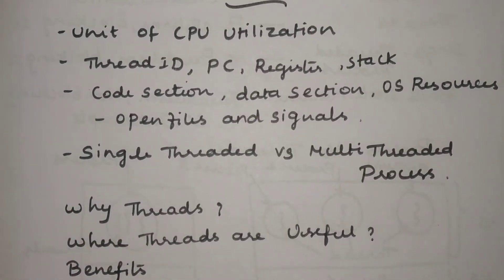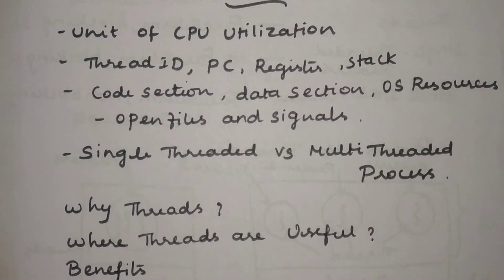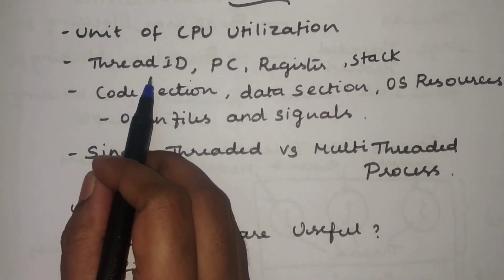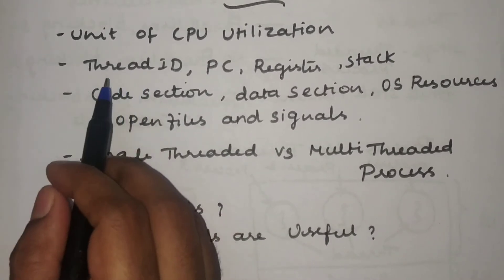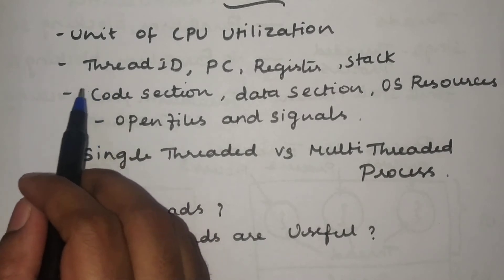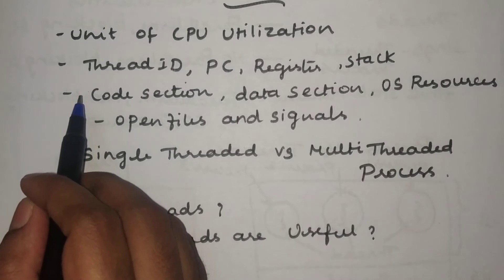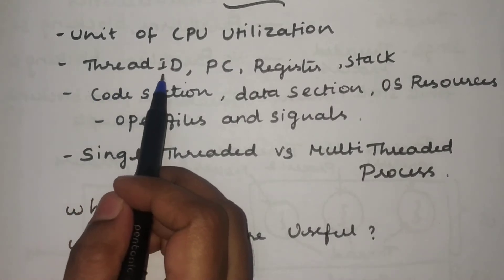A thread may consist of some information. Similar to the process, a thread will also have some information and the same functionality as the process, because threads are created within the process. So what information do we need to maintain in a threading environment? First, there is the thread ID — a unique identifier that should be given to each and every thread. If you are working with a multi-threaded environment, you should identify each thread separately, and for that we have one unique ID assigned to each thread.